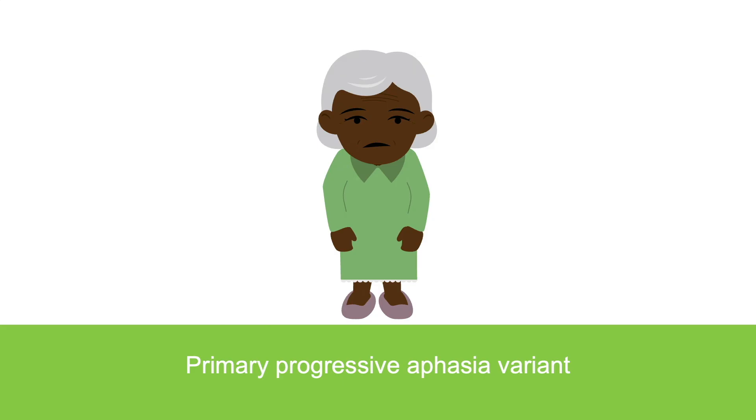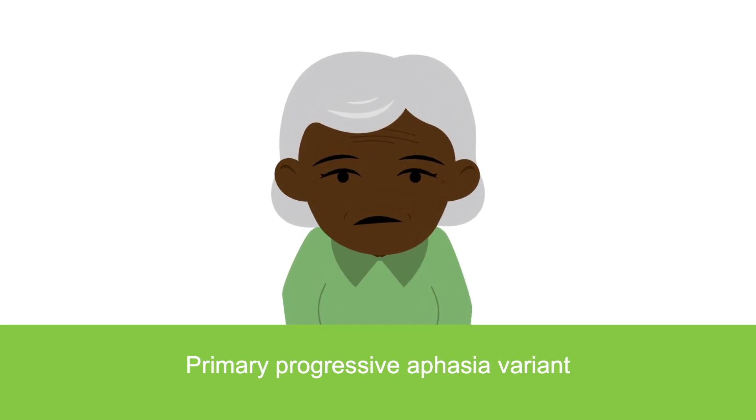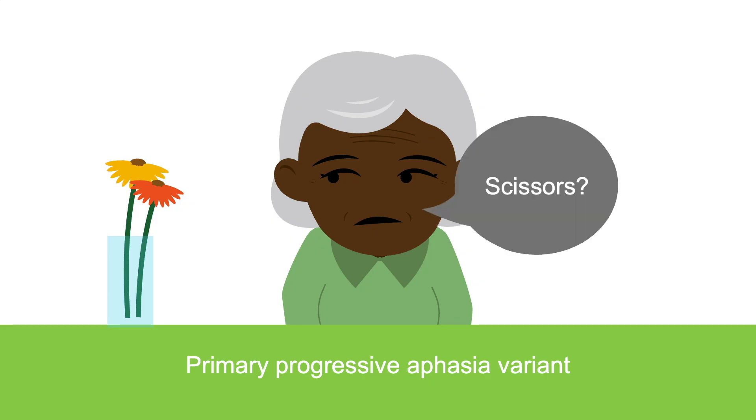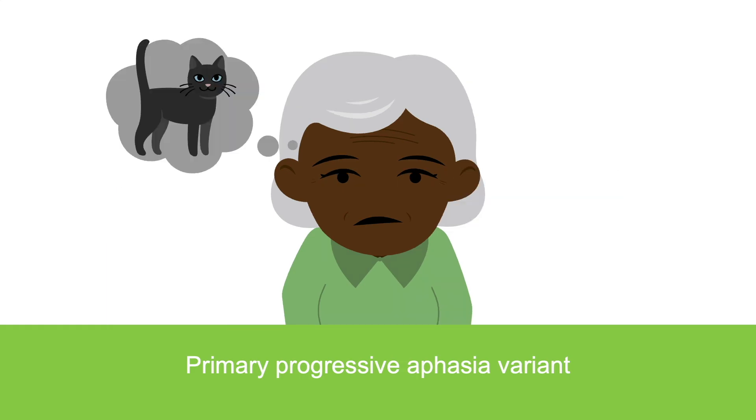The clinical hallmark of primary progressive aphasia variant FTD is impaired language deficits, out of proportion to decline in memory. These can be motor speech deficits, difficulty getting words out, word or object comprehension deficits, inability to recall the meaning of a word or what something's called, or word retrieval errors or word substitutions.